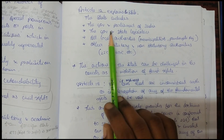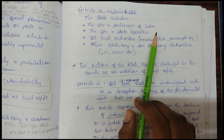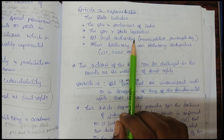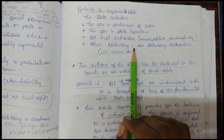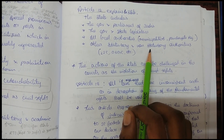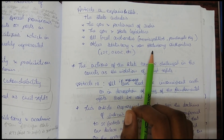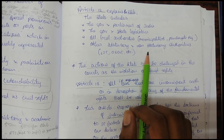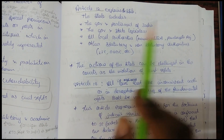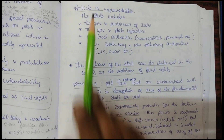The definition of State also includes all local authorities such as municipalities and Panchayati Raj institutions, as well as other statutory and non-statutory authorities. A statutory body is one established by law, while a non-statutory body is established through an executive resolution. All of these fall within the definition of 'State' under Article 12.